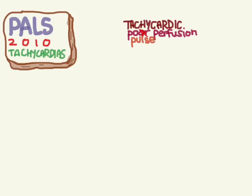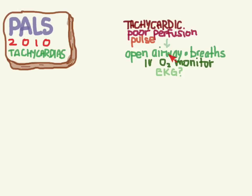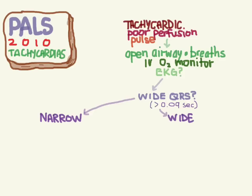Now we're going to talk about the tachycardias in PALS 2010. If your patient's heart is racing fast, they have poor perfusion — maybe altered mental status, shock, or low blood pressure — but they have a pulse, then you're going to open their airway, assist their breathing, and do the standard IVO2 monitor. If you can, get an EKG, because you want to know if your patient has a wide QRS.